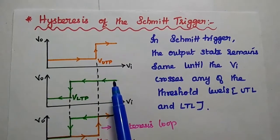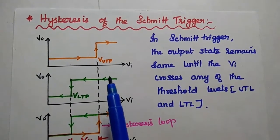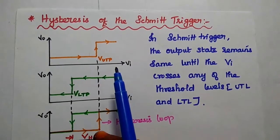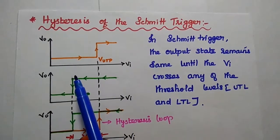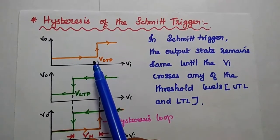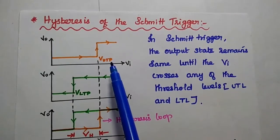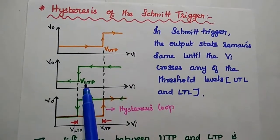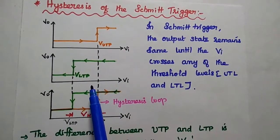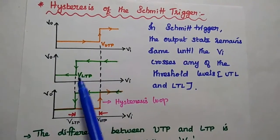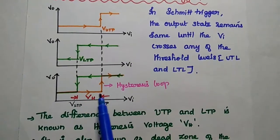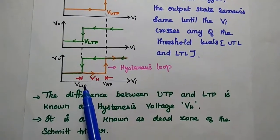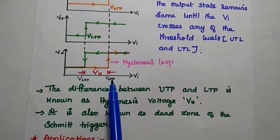Next is the hysteresis of the Schmitt Trigger — a very important concept. In the Schmitt Trigger, the output state remains the same until the input voltage crosses any of the threshold levels, either UTP or LTP. When the output changes its state from low to high at the upper threshold point, it remains there until the input crosses LTP. Whenever the input crosses LTP, it changes its state from high to low. This forms the hysteresis loop. The difference between the upper threshold point and lower threshold point is known as the hysteresis voltage, VH. It is also known as the dead zone of the Schmitt Trigger.